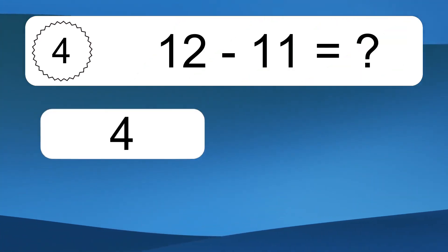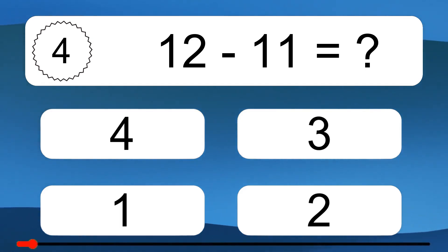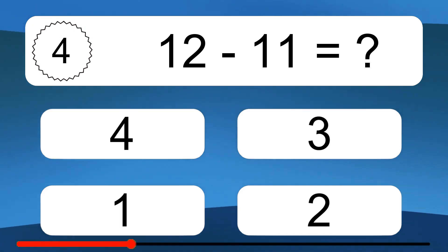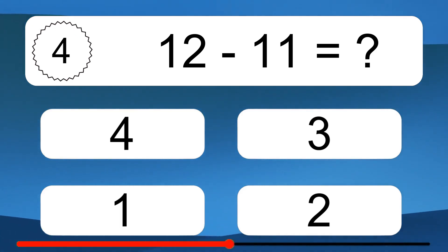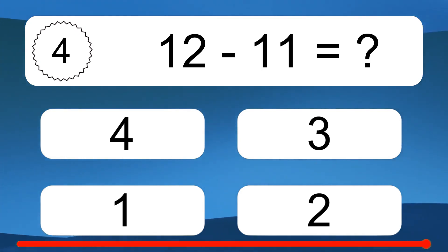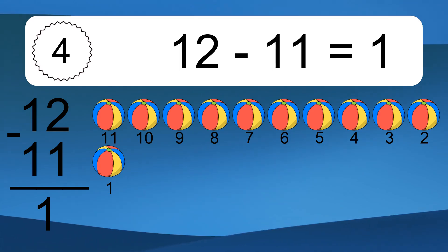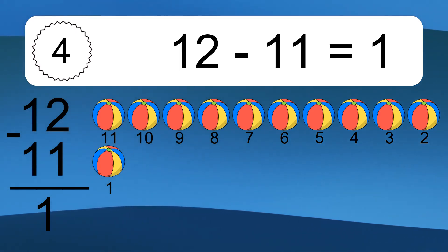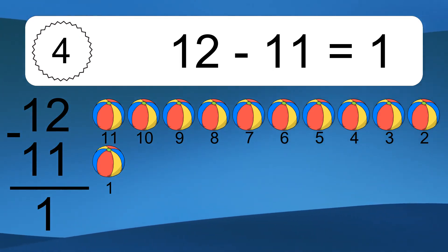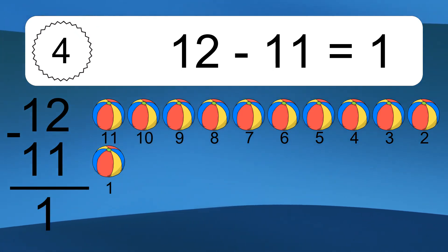12 minus 11 equals what? 12 minus 11 equals 1. Let's count it. 11, 10, 9, 8, 7, 6, 5, 4, 3, 2, 1.